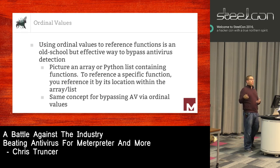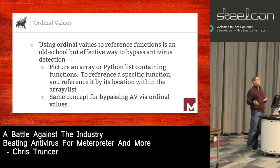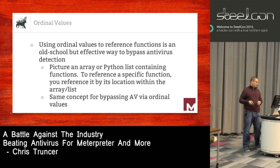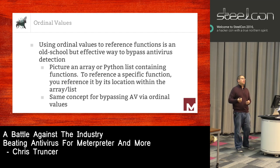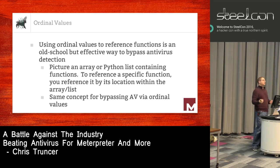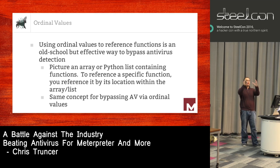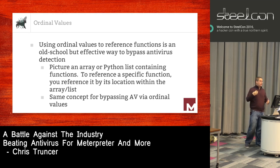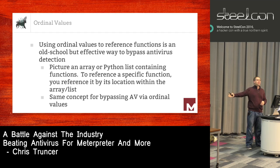Changing function calls can work really well, but sometimes it still gets caught. An old-school red teaming trick is using ordinal values to reference function calls to bypass antivirus. The way I picture it is: imagine an array containing function calls in each spot. In order to reference a specific function, you reference its location in that array — not by name, but by where it's located.